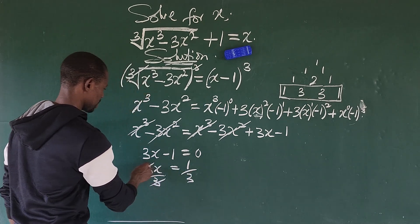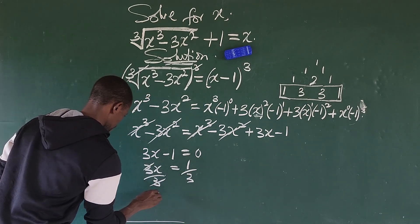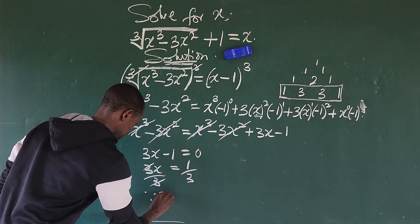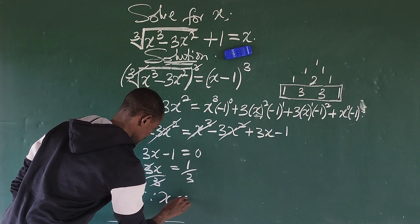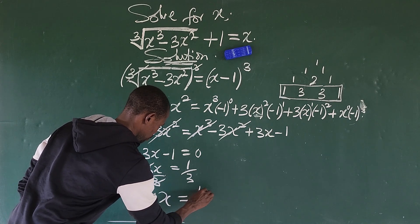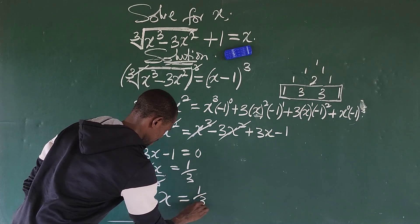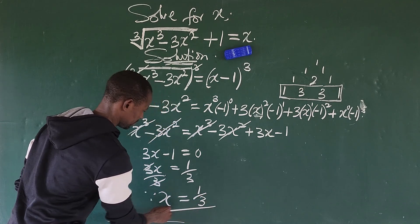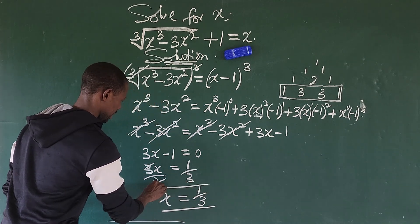The x cubed terms cancel each other, and the minus 3x squared terms also cancel. We are now left with 3x minus 1 equals 0, so 3x equals 1. Dividing both sides by 3, we get x equals 1 over 3.